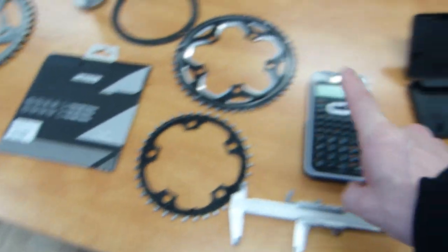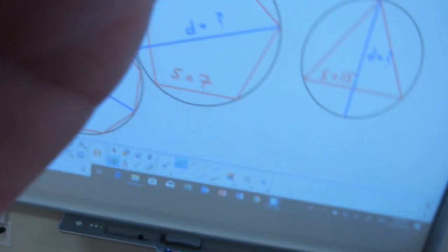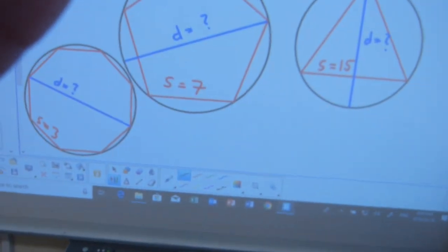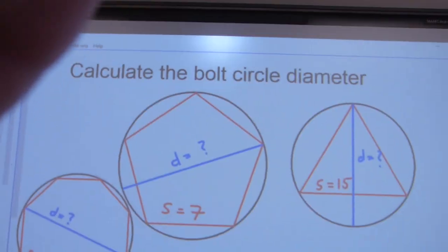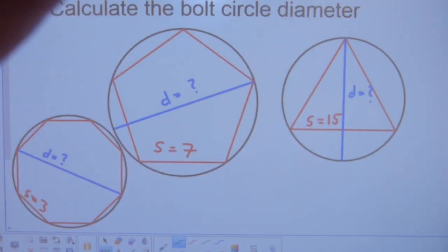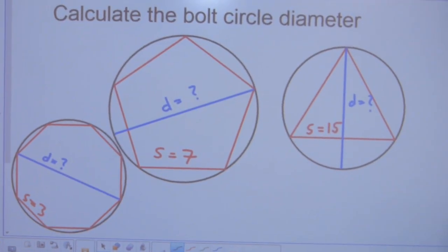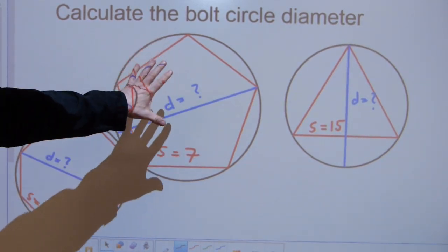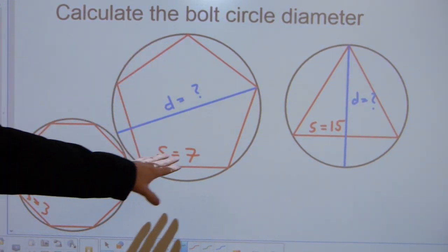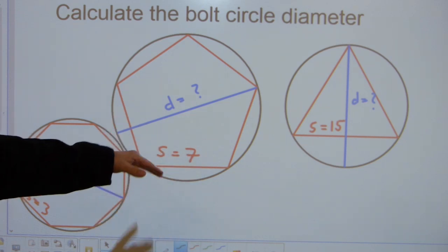So you need one measurement and one calculation, 15 seconds, you're going to get your pitch circle diameter or bolt circle diameter. On these polygons that I have here, I don't have inches or centimeters, nothing, it's just seven. If you have a measurement from hole to hole, it could be any number.